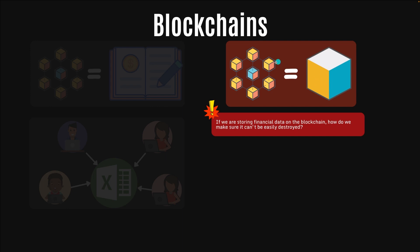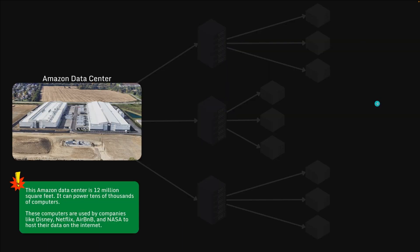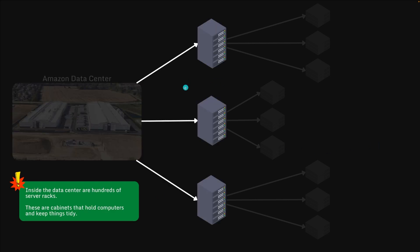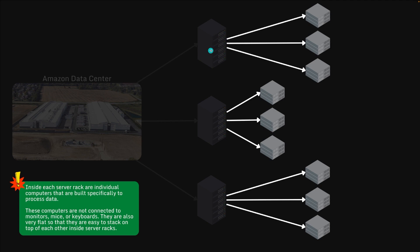But if we're storing financial data on the blockchain, how do we make sure that it's not easily destroyed? To understand how blockchains are durable, we have to first talk about how we store data today. This is Amazon's data center — it's 12 million square feet and can power tens of thousands of computers. These computers are used by companies like Disney, Netflix, Airbnb, and even NASA to host their data on the internet. Inside this data center are hundreds of server racks — cabinets that hold the computers. Inside those server racks are individual servers that are very flat and designed to fit inside server racks.